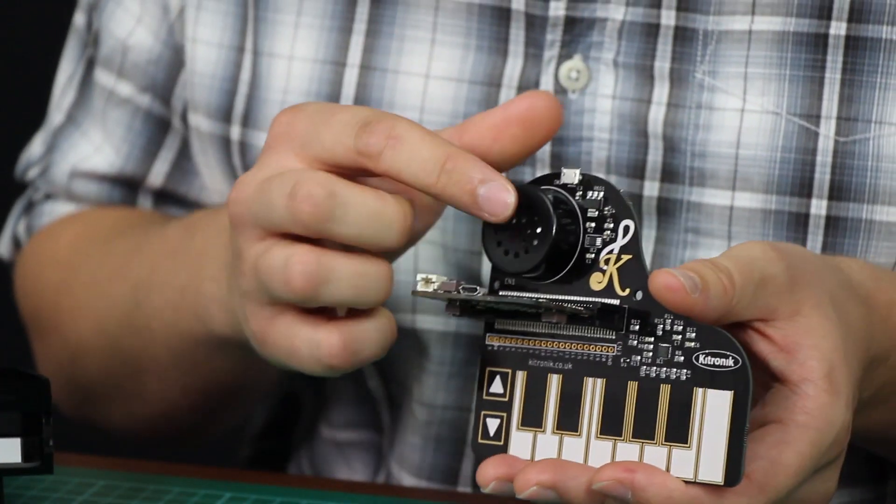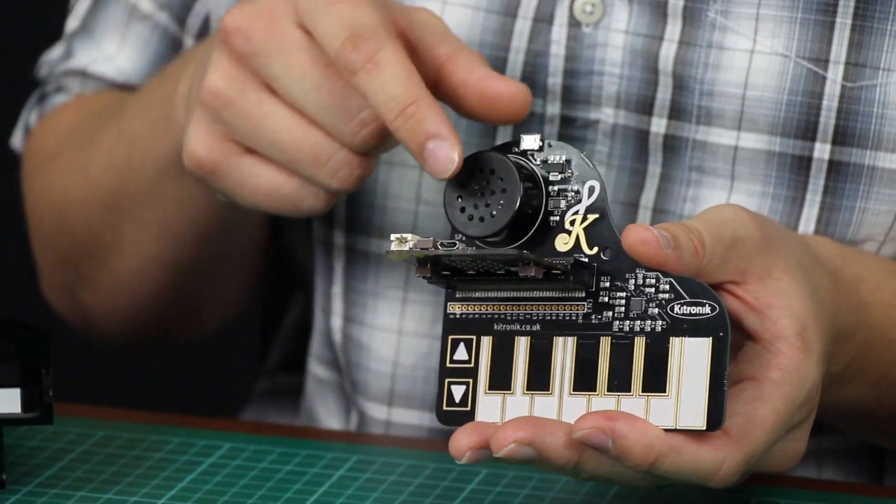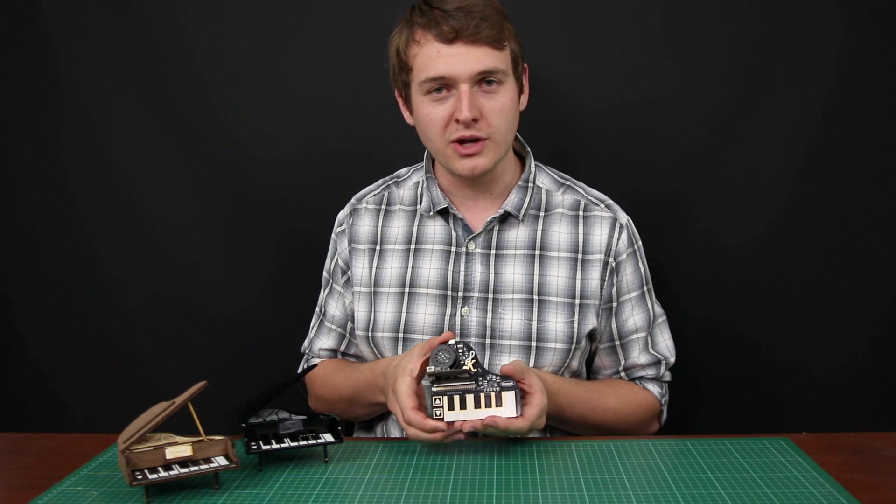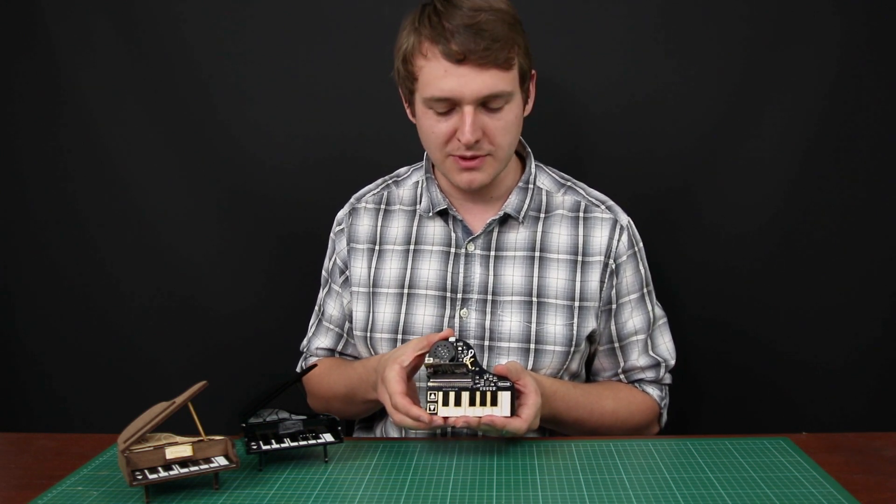You can then see here there's an onboard amplifier and speaker system which enables audio output to be processed through the BBC Microbit.